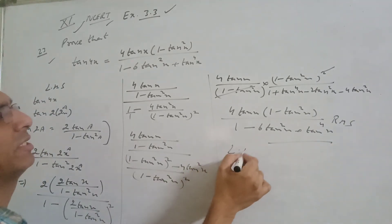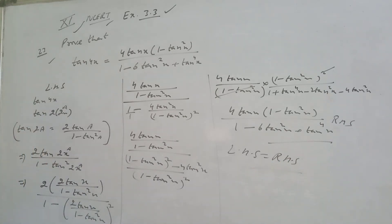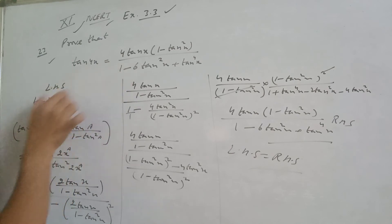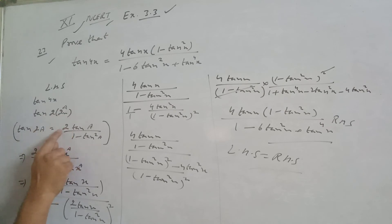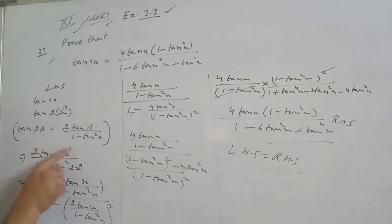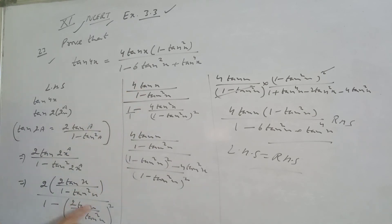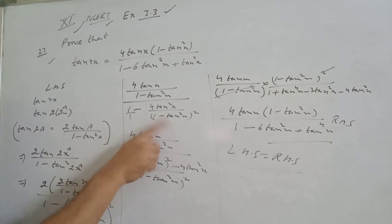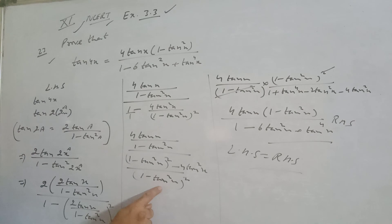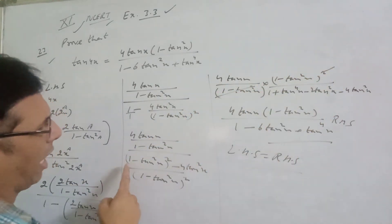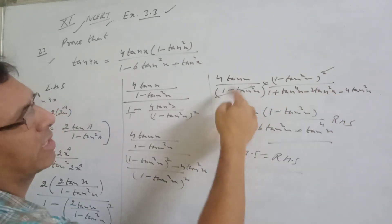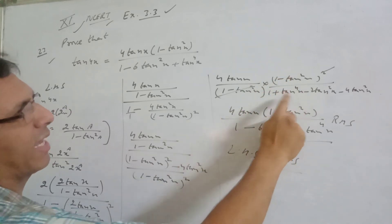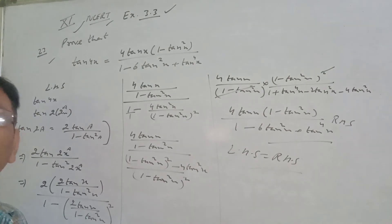Left hand side is equal to right hand side. The 1 minus tan square x cancels. We apply the formula of a minus b whole square, which is a square plus b square minus 2ab. The remaining is 4 tan x into 1 minus tan square x upon 1 minus 6 tan square x plus tan power 4x, which is equal to the right hand side. I hope it is clear. Thank you.